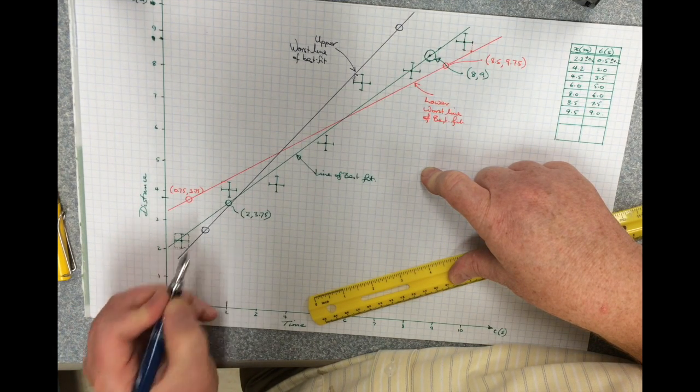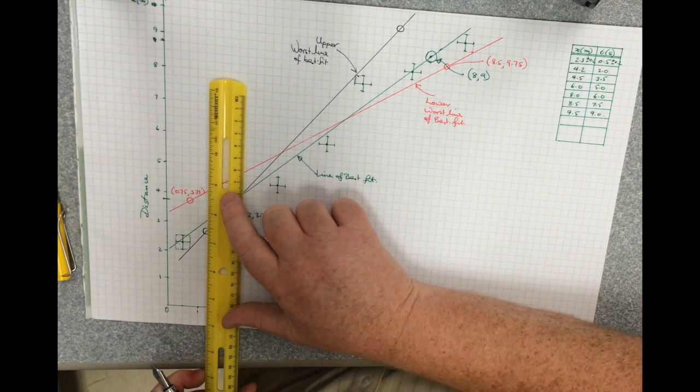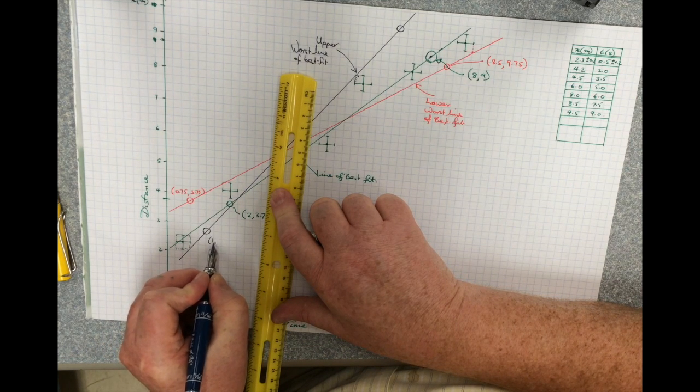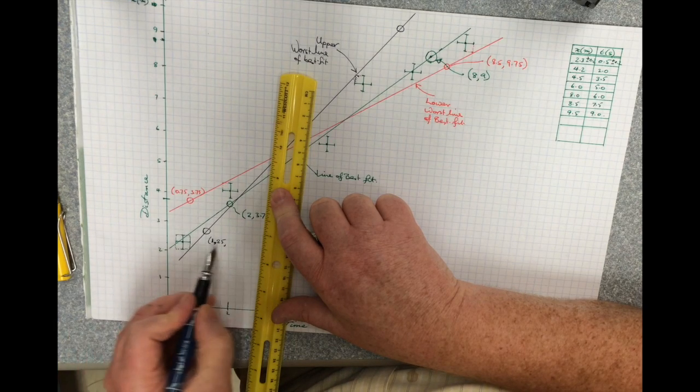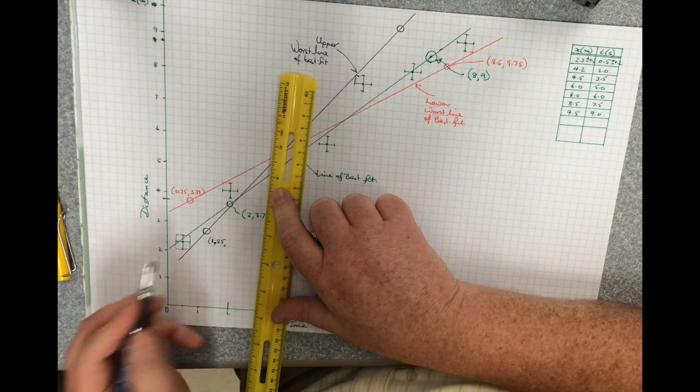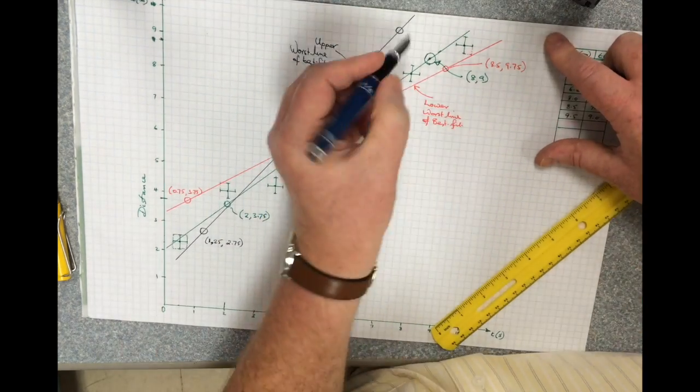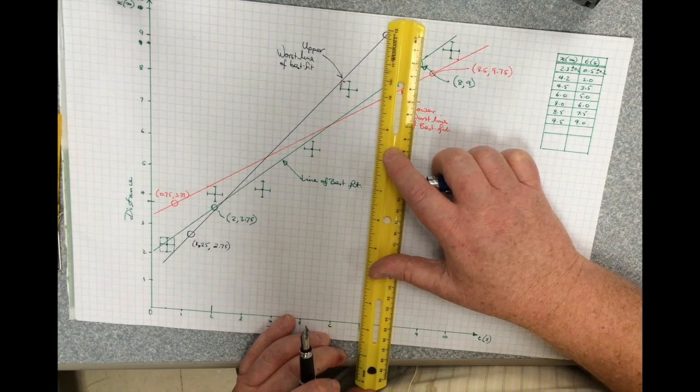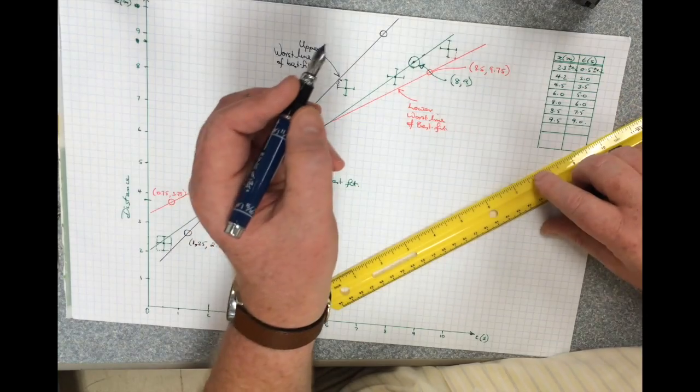And this one looks pretty good. So again, I'll use my ruler. That's 1.25 and 2.75. This one up here is 7 and 9.75.